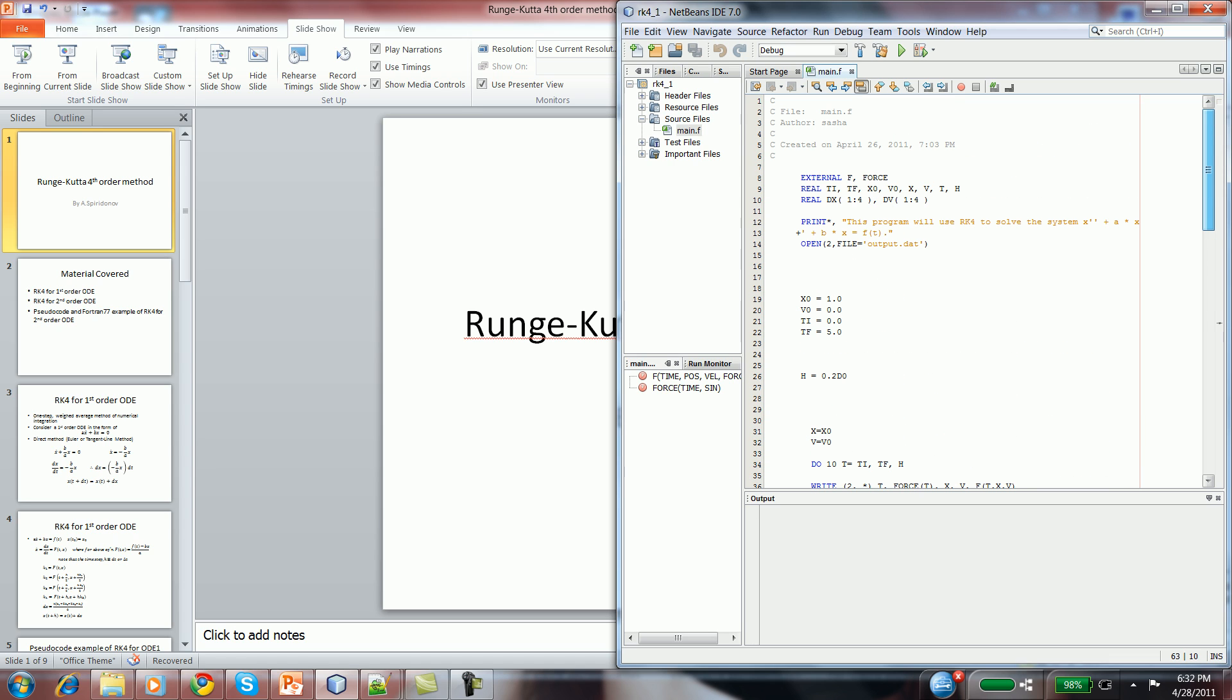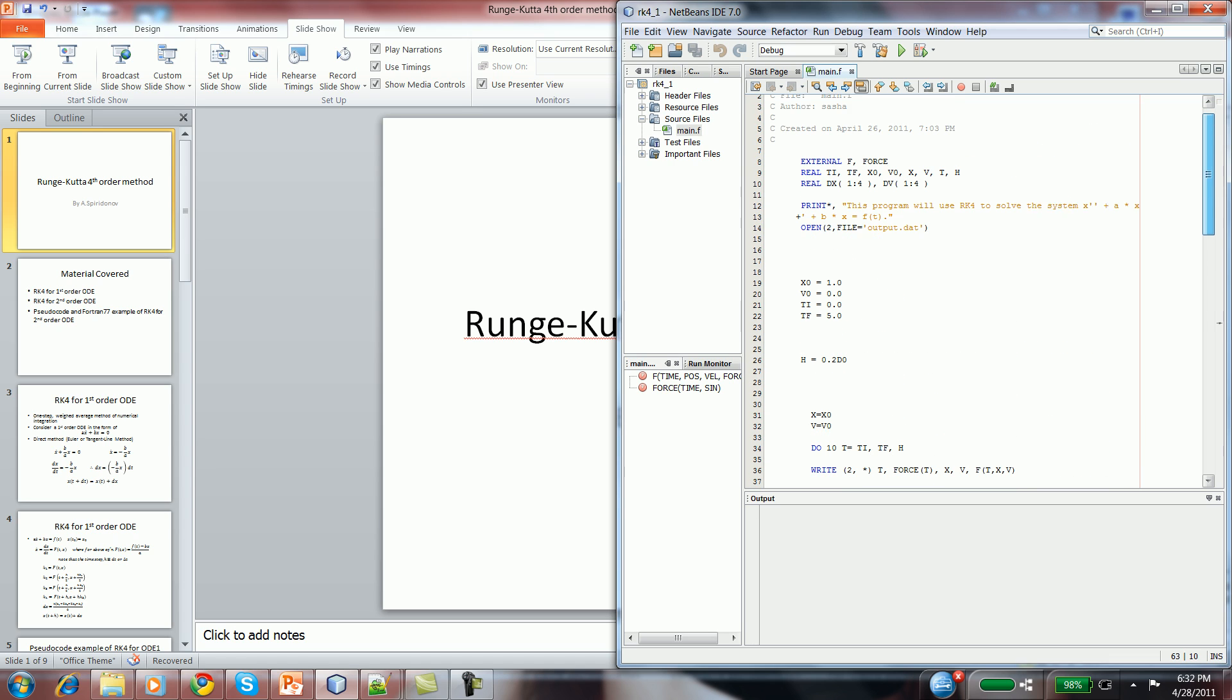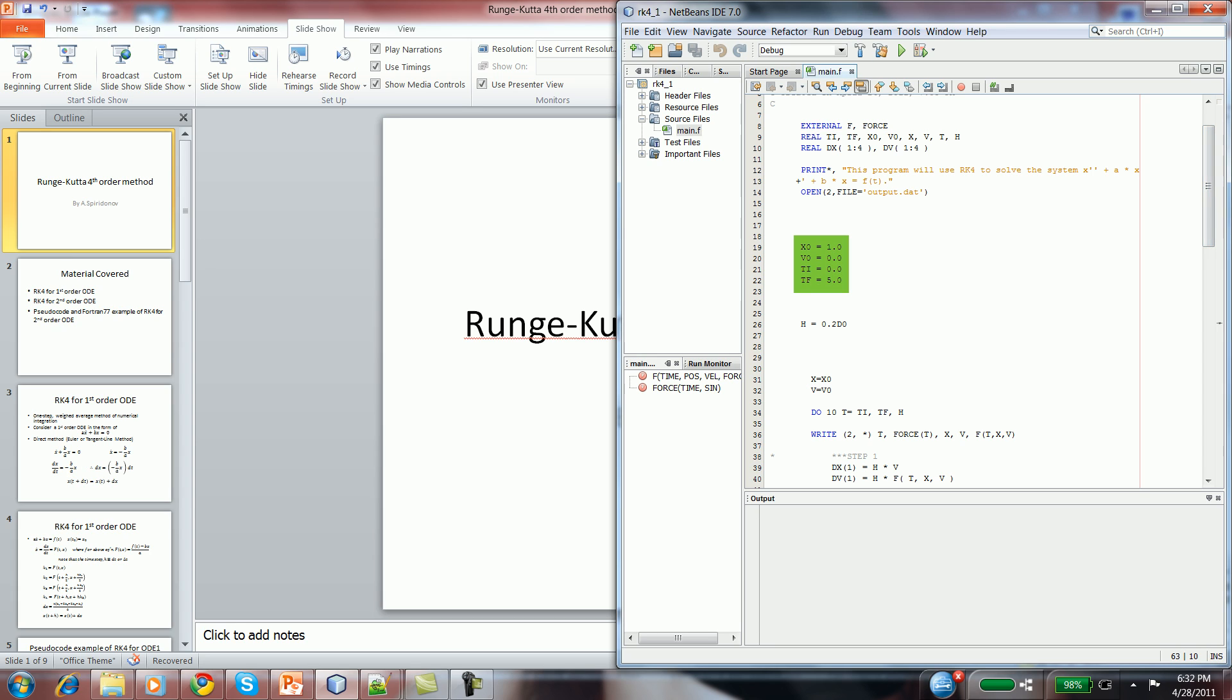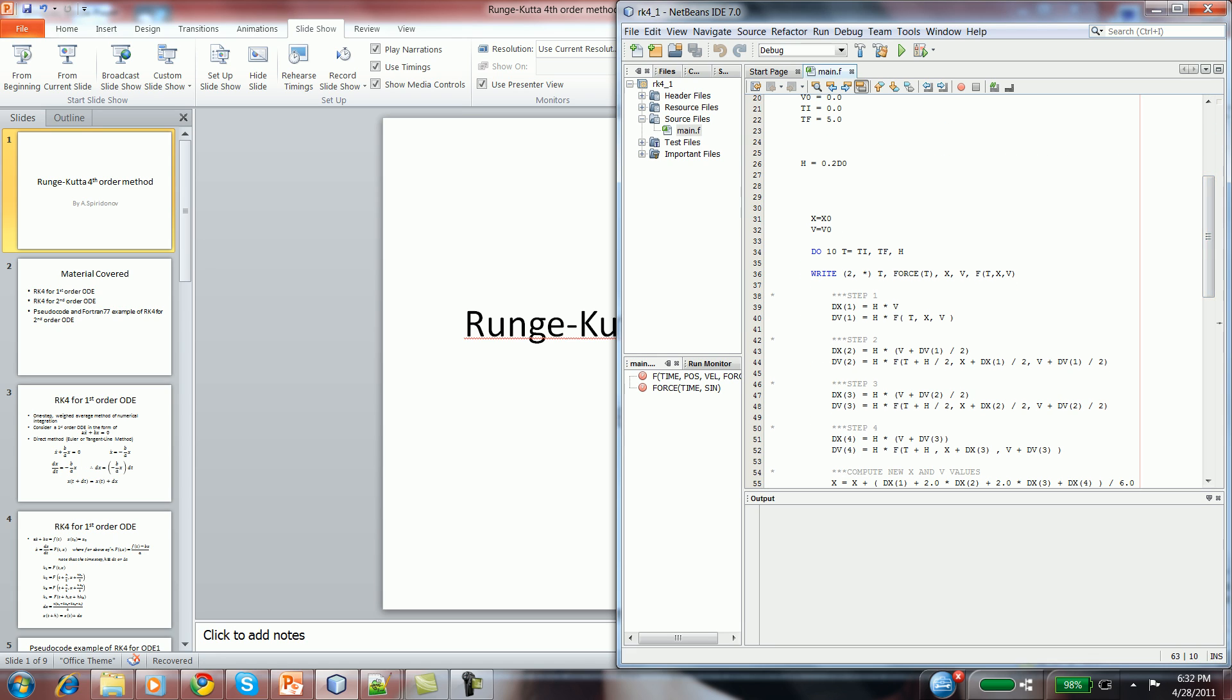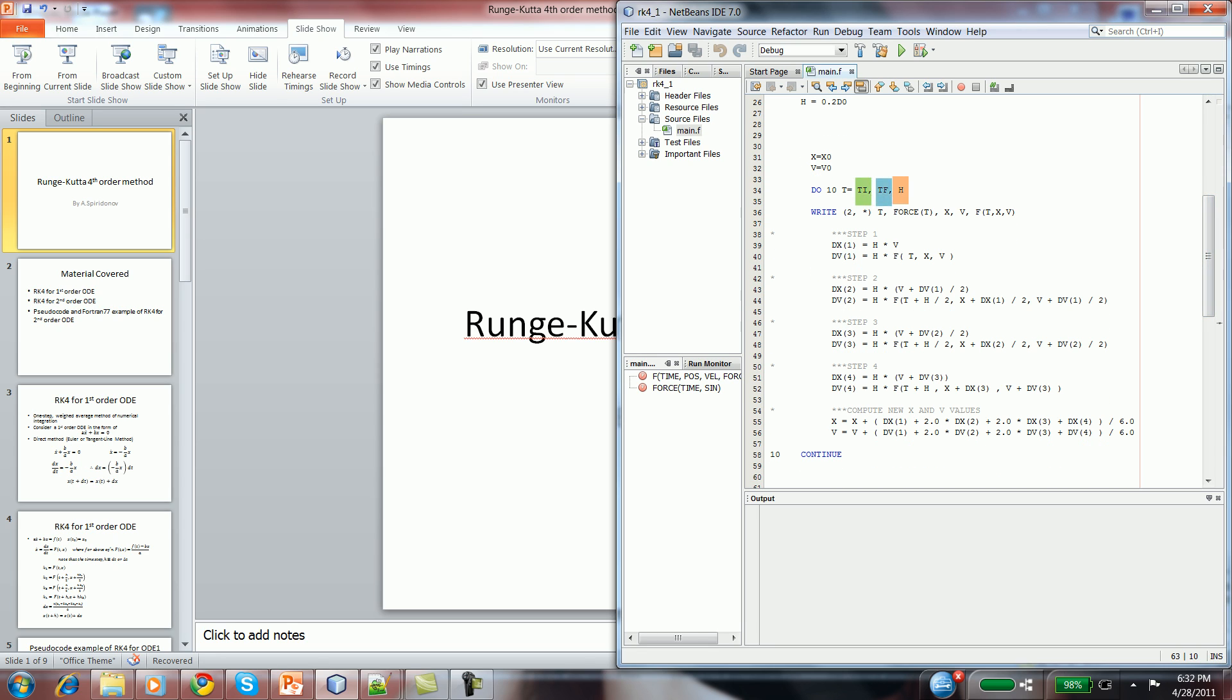Then, in the main body of the program, I define my initial condition in the range. I define all the values. Before the loop, I assign initial position to current position and initial velocity to current velocity. Then, from initial time to final time, with an increment of h, or 0.2 in our case, I perform a loop.